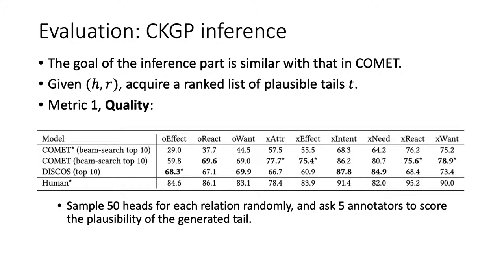Second, we evaluate the inference part of CKGP, where Acer edges are scored by the link prediction model. We adopt a similar setting to COMET — that is, given head and relation to predict tail. We randomly sample 50 heads for each relation to evaluate the human-annotated quality compared with COMET, where each head is associated with 10 tails. We can see that the retrieval-based Discourse achieves comparable results with generating tails directly using pre-trained language models.